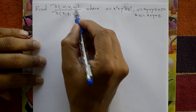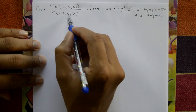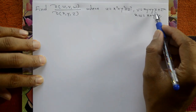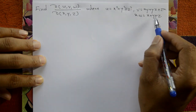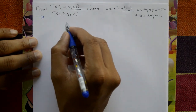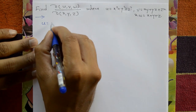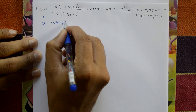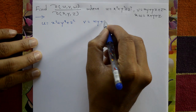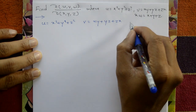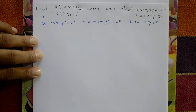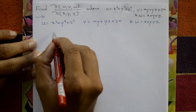Find ∂(u,v,w)/∂(x,y,z) where u is given as x² + y² + z², v is equal to xy + yz + zx, and w is equal to x + y + z. This is the Jacobian. Given u = x² + y² + z², v = xy + yz + zx, and w = x + y + z.